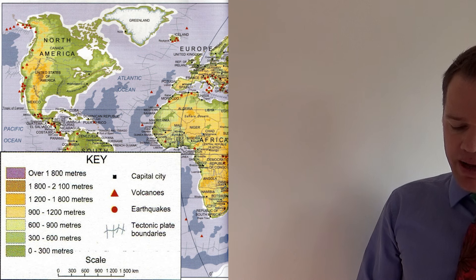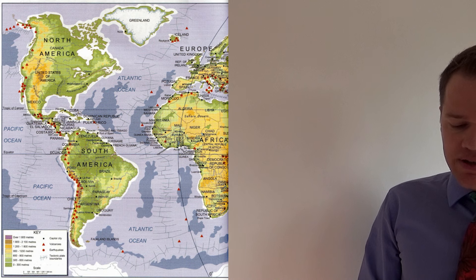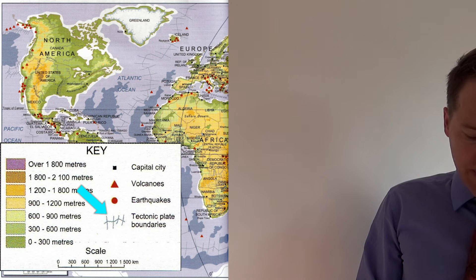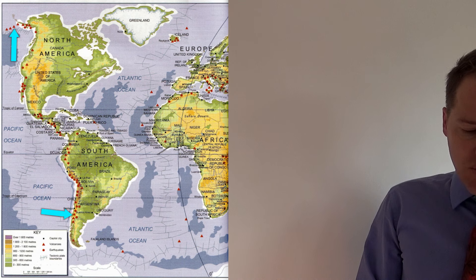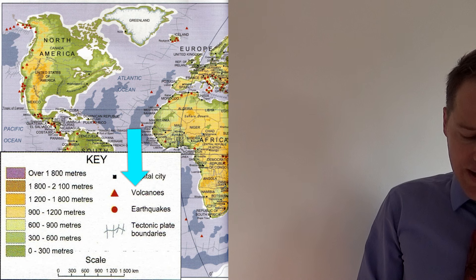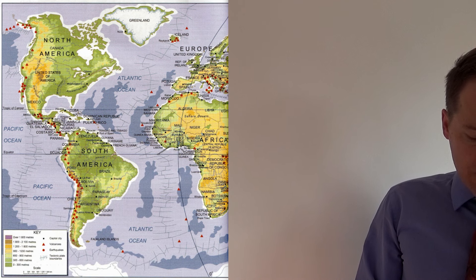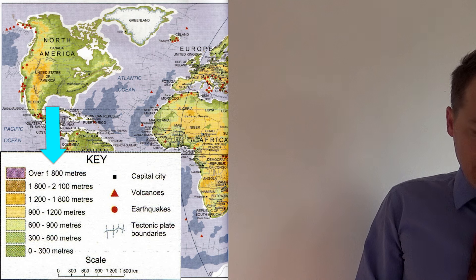The legend gives you the meaning of each of these lines, colors, symbols, and shapes. One of the first things I noticed when I look at the map are these lines — and in the key we'll see they indicate where tectonic plate boundaries are. Then I see these red triangles. In the key it tells you exactly what they mean: they are volcanoes. The different colors tell you the height of the land.